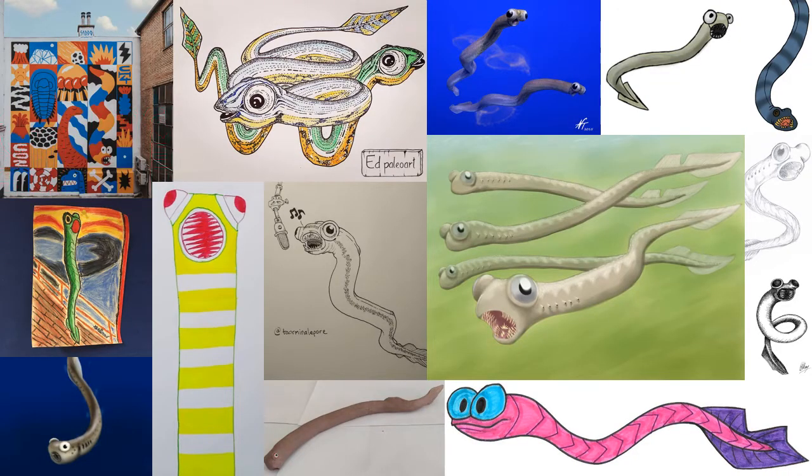Another issue with conodonts is a lack of soft-bodied remains. There are some soft-bodied remains that are known, but in general, for a lot of taxa, we don't actually have any soft-bodied remains. This has led to a lot of speculation and inferring simply from their teeth, which is potentially why there's a lot of very strange artist renditions of what the animal itself might have looked like.